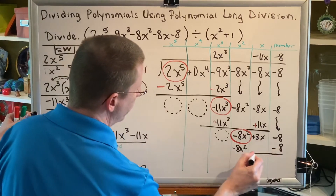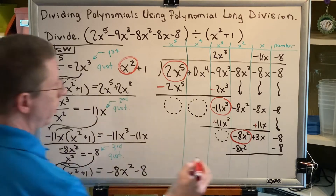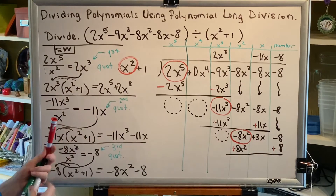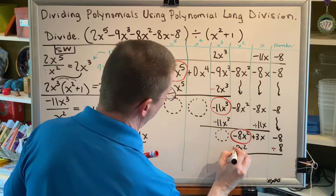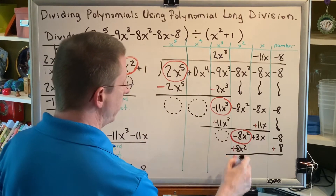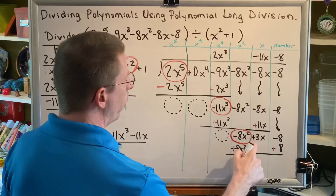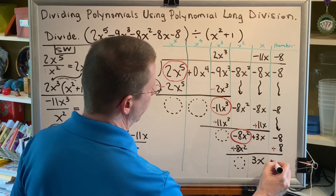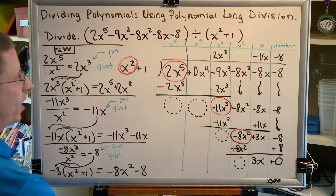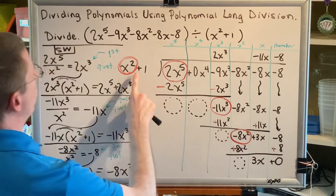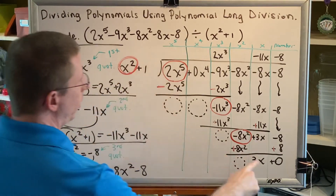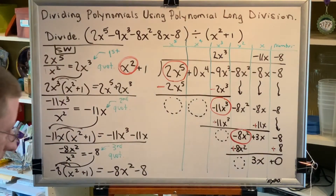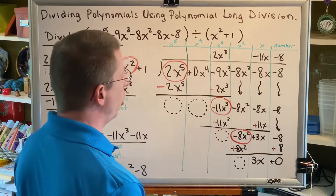Draw the line, change the sign, then combine. I change both minuses to pluses, then combine vertically. Negative 8x squared plus 8x squared is 0. 3x combined with nothing is still 3x. And negative 8 plus 8 is 0. The biggest exponent of the lowest under is 1 — this is 3x to the first power. The biggest exponent of the original denominator is 2. Is 1 less than 2? Yes, so we can finally stop. This is our remainder — it's what's left over. And 3x plus 0 is simply 3x.